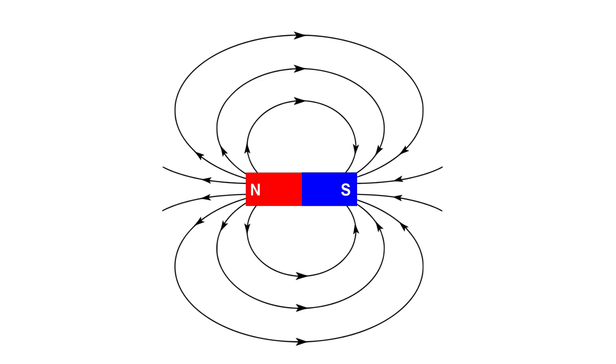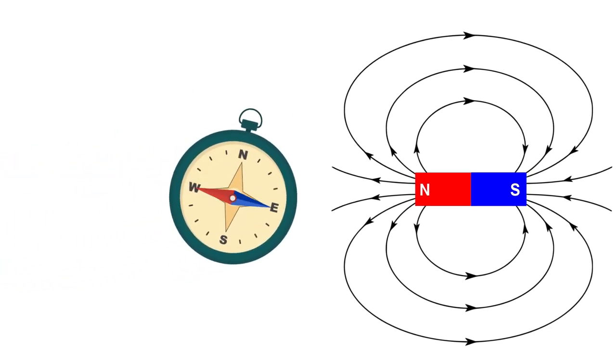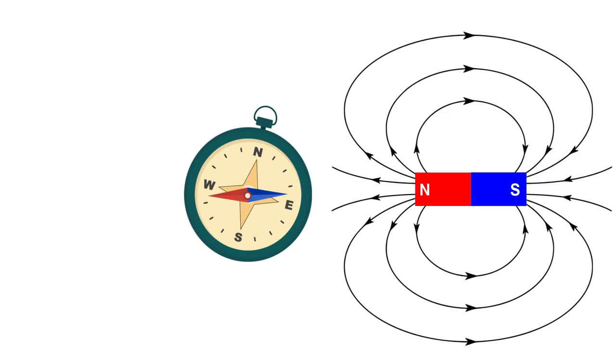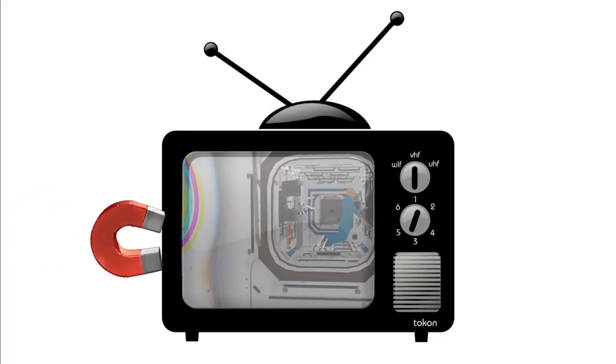Okay, so magnetic fields can be measured directly or indirectly. Directly would be something like a compass where the instrument itself is sensitive to the magnetic field. Indirectly would be to measure known effects a magnetic field has on its surroundings.